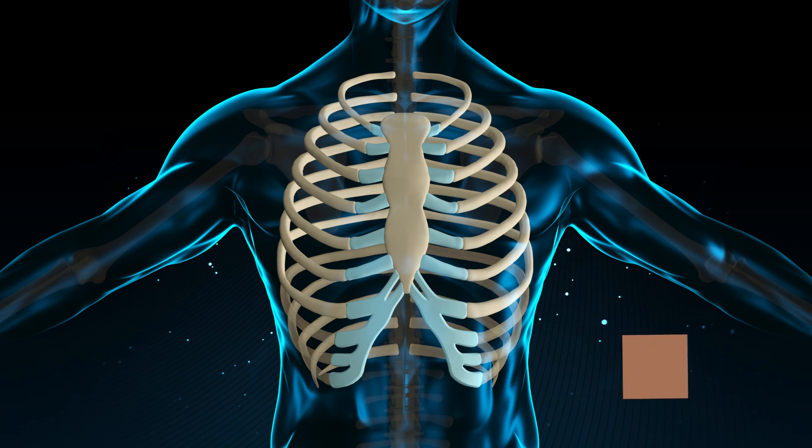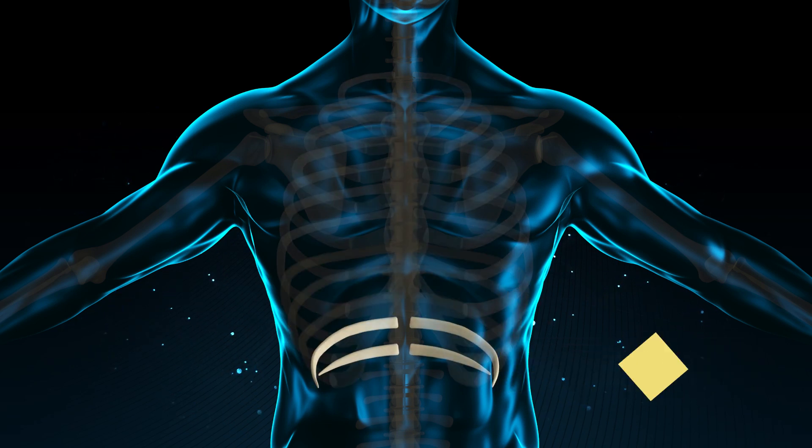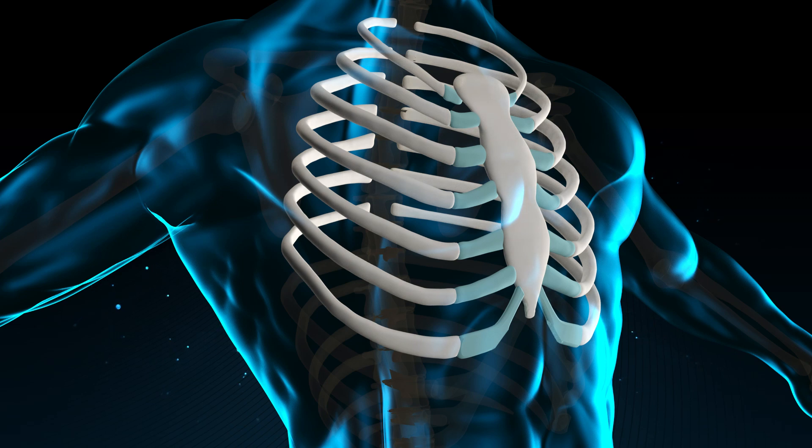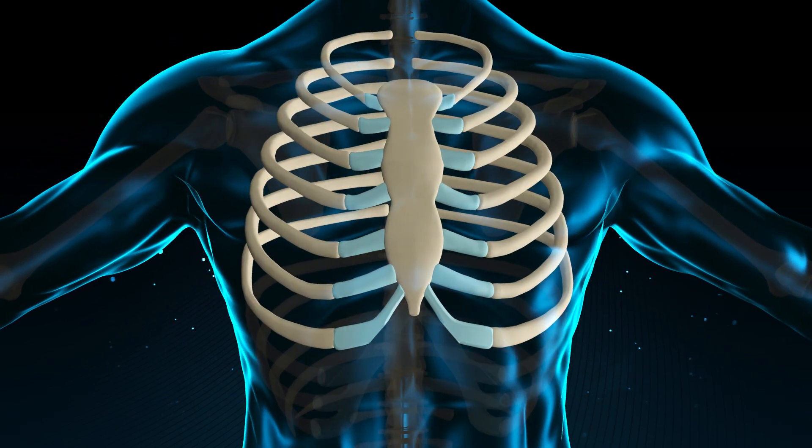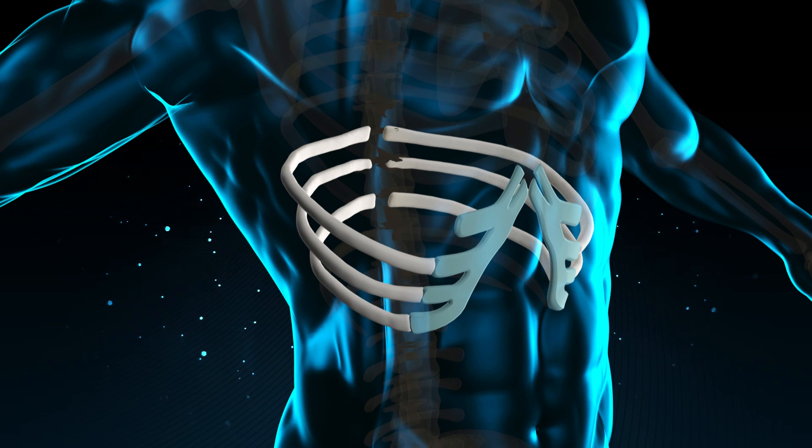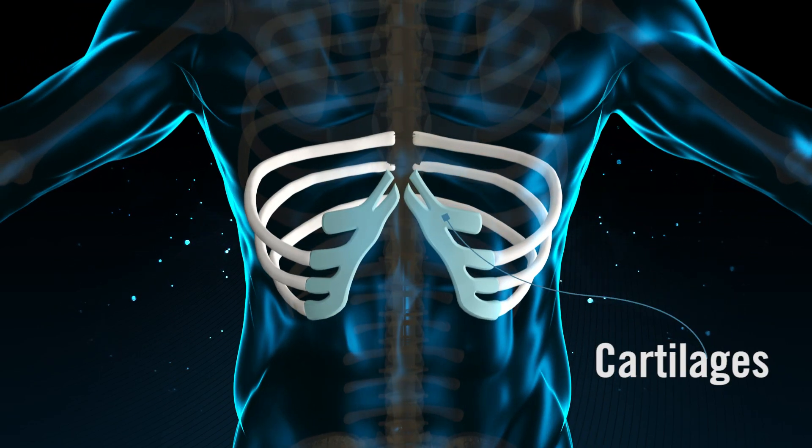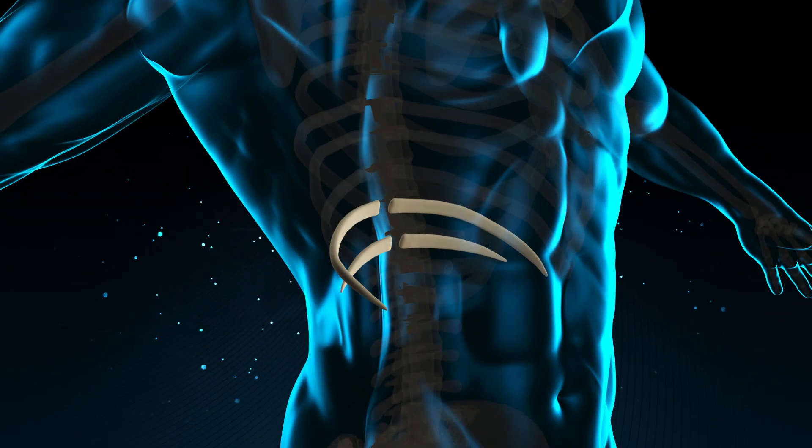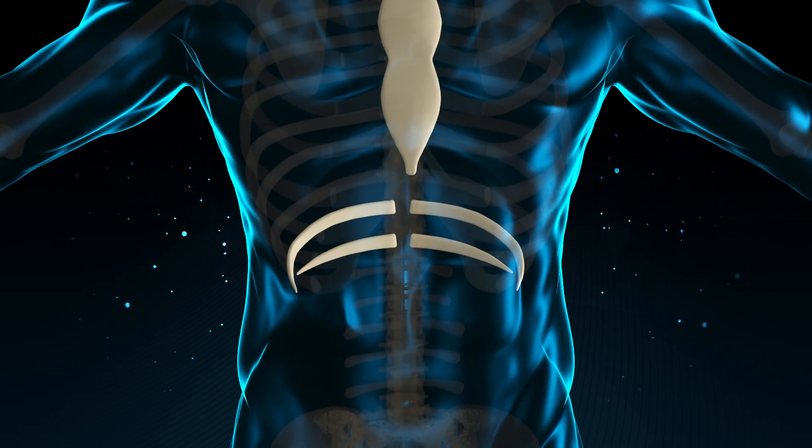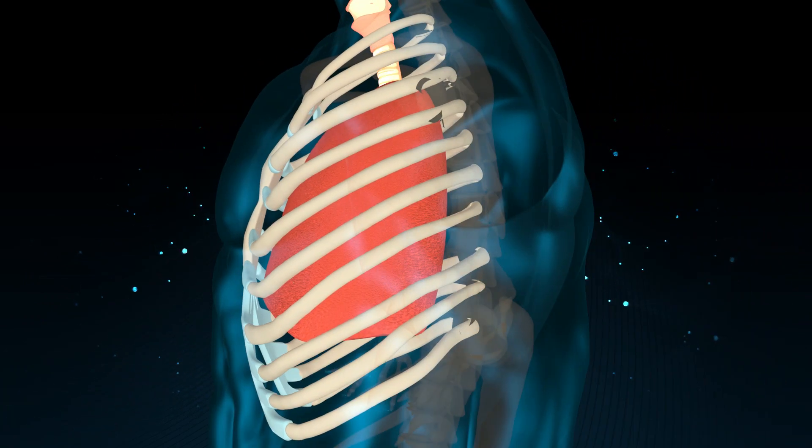Ribs are of three types: true ribs, false ribs, and floating ribs. The first seven ribs of the rib cage are attached directly to sternum; they are called true ribs. Eighth, ninth, and tenth ribs are called false ribs. These ribs are not attached directly to sternum. The rib cage and sternum cover and protect the vital organs such as the heart and lungs. The ribs are also helpful in breathing.